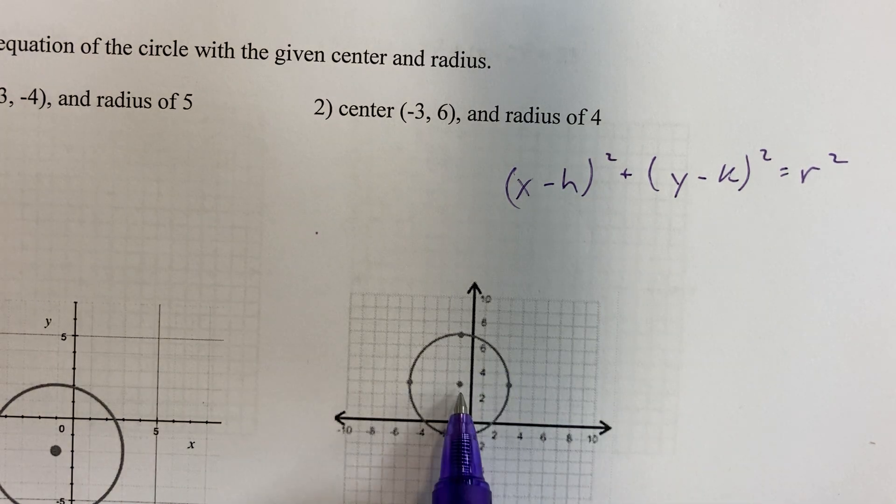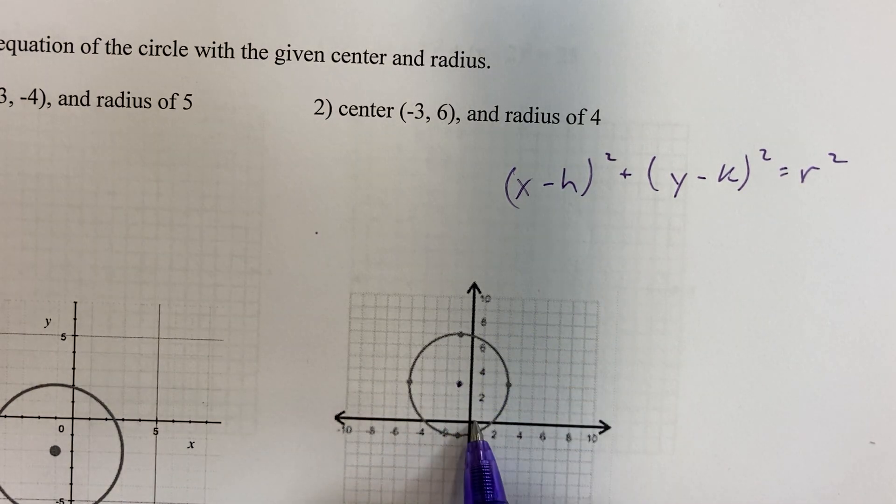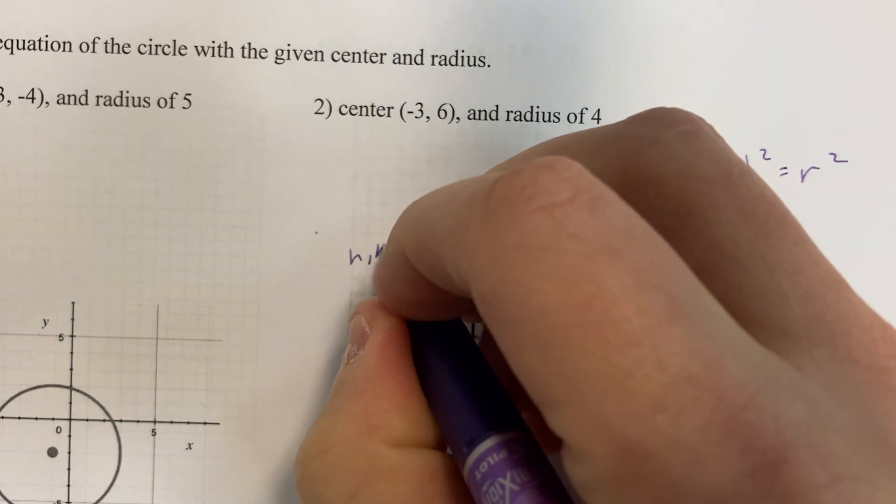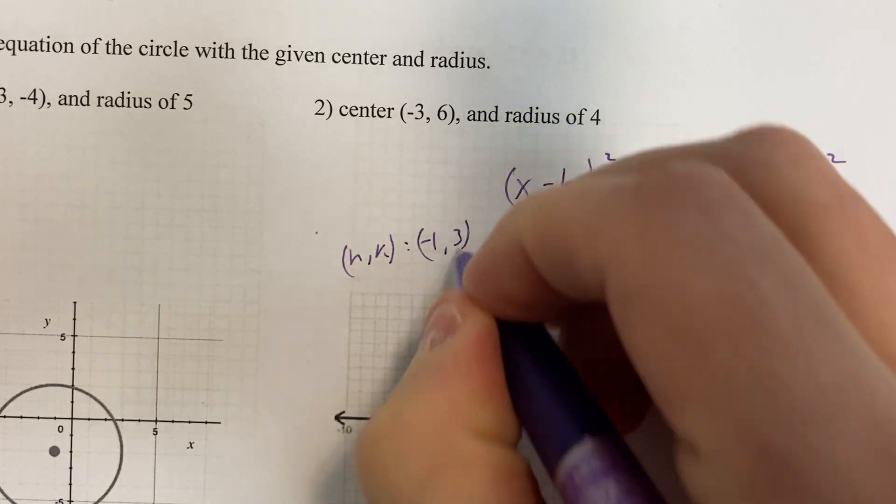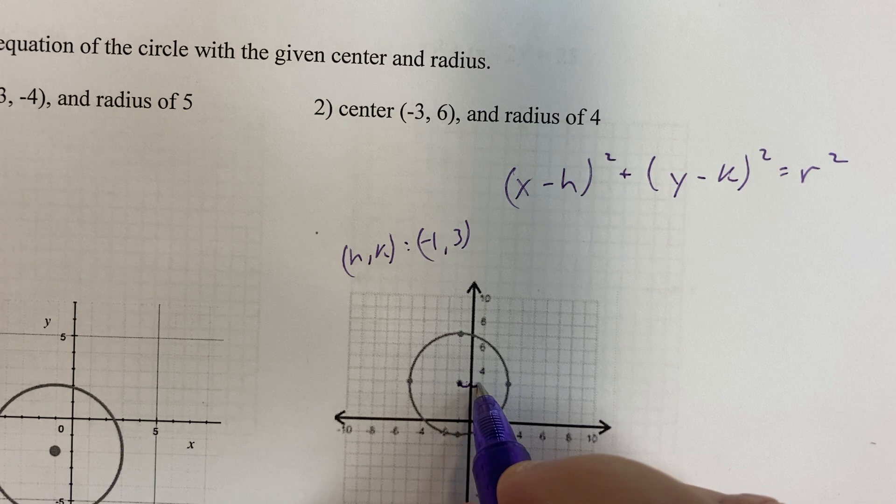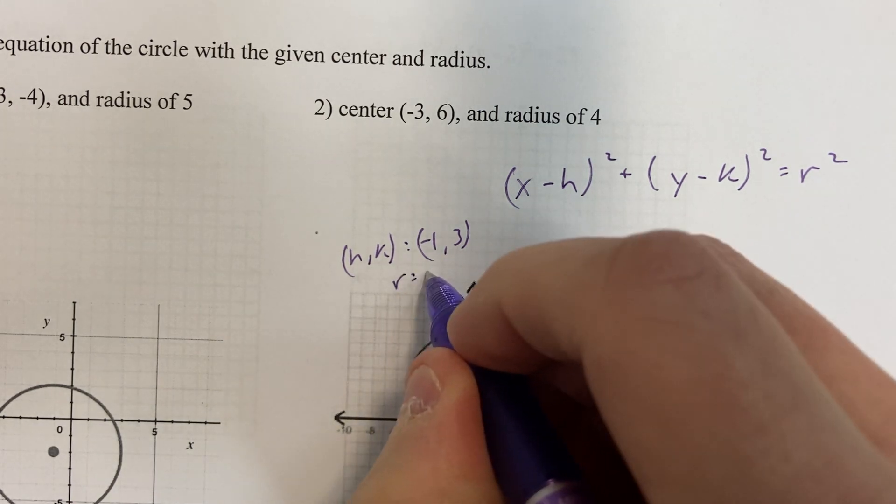This circle has a center at (-1, 3). So our h, k is (-1, 3). And the radius, you can count over 1, 2, 3, 4. Radius equals 4.